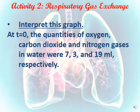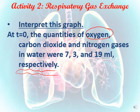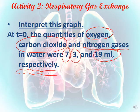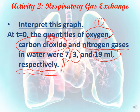At time zero, the quantity of oxygen, carbon dioxide, and nitrogen gases in water were 7, 3, and 19 milliliters respectively. The word 'respectively' means the first number corresponds to the first item: oxygen was 7 milliliters, carbon dioxide was 3 milliliters, and nitrogen gas was 19 milliliters. So instead of listing each one separately, you can use 'respectively' to match numbers to their corresponding items in order.